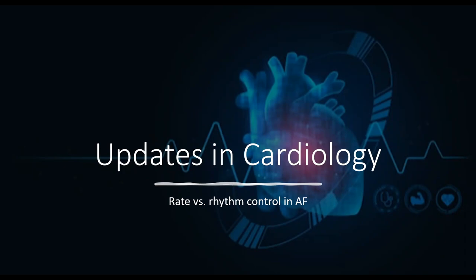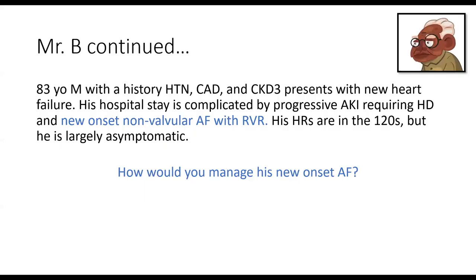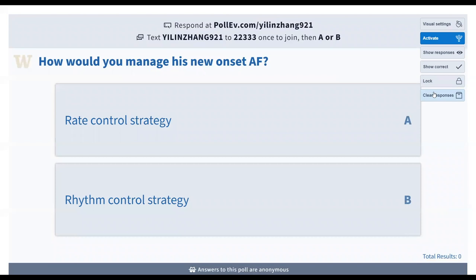Let's go back to Mr. B. Remember, he has new onset non-valvular AFib with RVR. His heart rates are now in the 120s, but he's largely asymptomatic. How would you manage his new onset AFib? We were talking about anticoagulation and primary stroke prevention—here I want to talk about rate versus rhythm control. Which do you think is more appropriate for him?